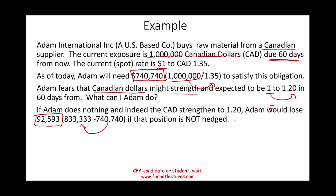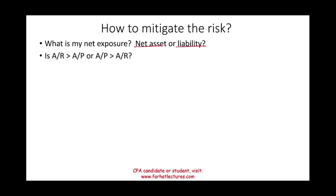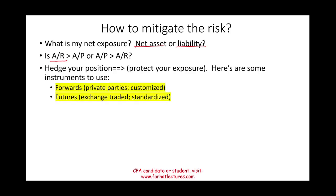Write down this data because I'll be using it to illustrate various concepts. Now, how do we hedge this risk? First, you need to know your exposure — is it a net asset or a net liability? In this example, we have a net liability: accounts payable. You always need to compare your foreign currency AR to AP. If you have more AR than AP, you have an asset exposure; if more AP than AR, a liability exposure.